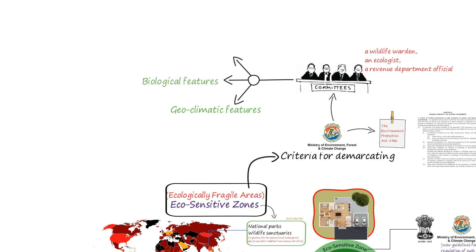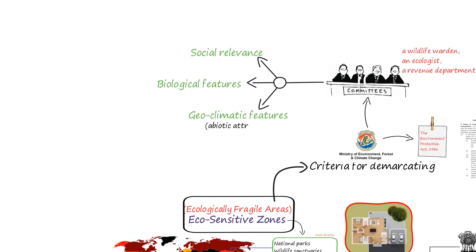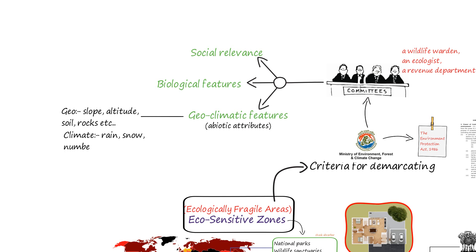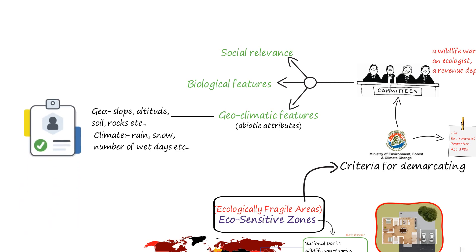The committee has defined three important categories to consider in defining eco-sensitive zones. The first is geoclimatic features, which falls under abiotic attributes. Geographic features of a place such as slope, altitude, soil, rocks, etc., and climatic features including rain, snow, number of wet days, etc. It is important to consider and assess these geoclimatic features while giving permits to carry out any activity in the eco-sensitive zones, and to ensure that such activities do not harm the ecosystem or make it any more vulnerable.